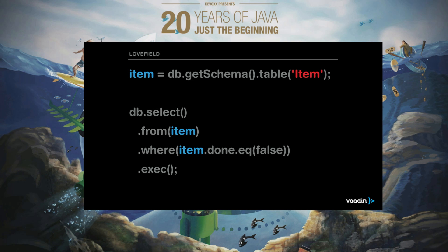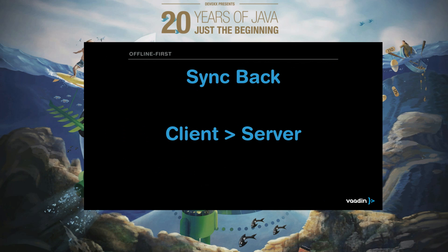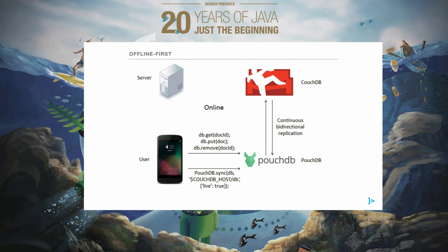It sounds easy, but there are a few problems. The problem with Lovefield is that this strategy is one-directional. You can have your data from the server saved in the browser, but what if the user modifies the data? How do you sync it back? This is actually a problem in Lovefield, and they will possibly not support it anytime soon. That's why there are other solutions that provide this out of the box — like Firebase. Firebase is a commercial solution where you can host your database in their cloud. Another interesting solution is PouchDB.